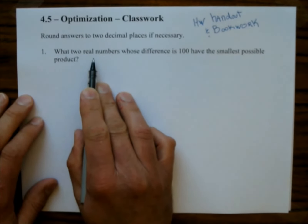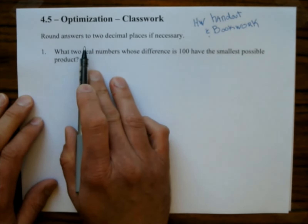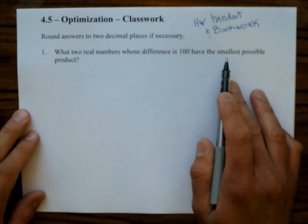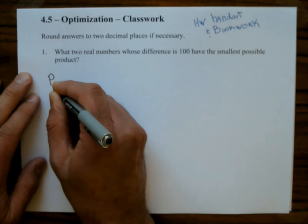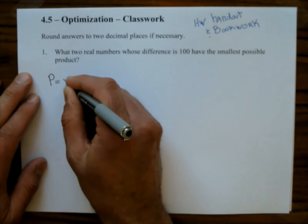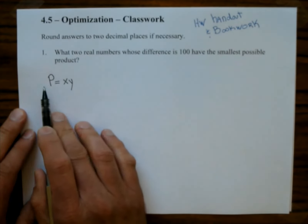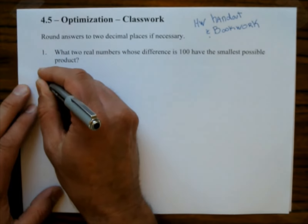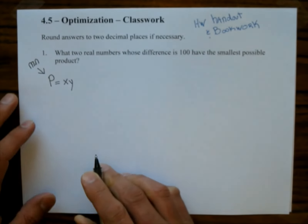What two real numbers whose difference is 100 have the smallest possible product? We're going to round answers to two decimal places if necessary. We want the smallest possible product — that's our goal. So we want two real numbers; I'm going to call them X and Y. We'll start off with an equation, and we want to find the minimum.